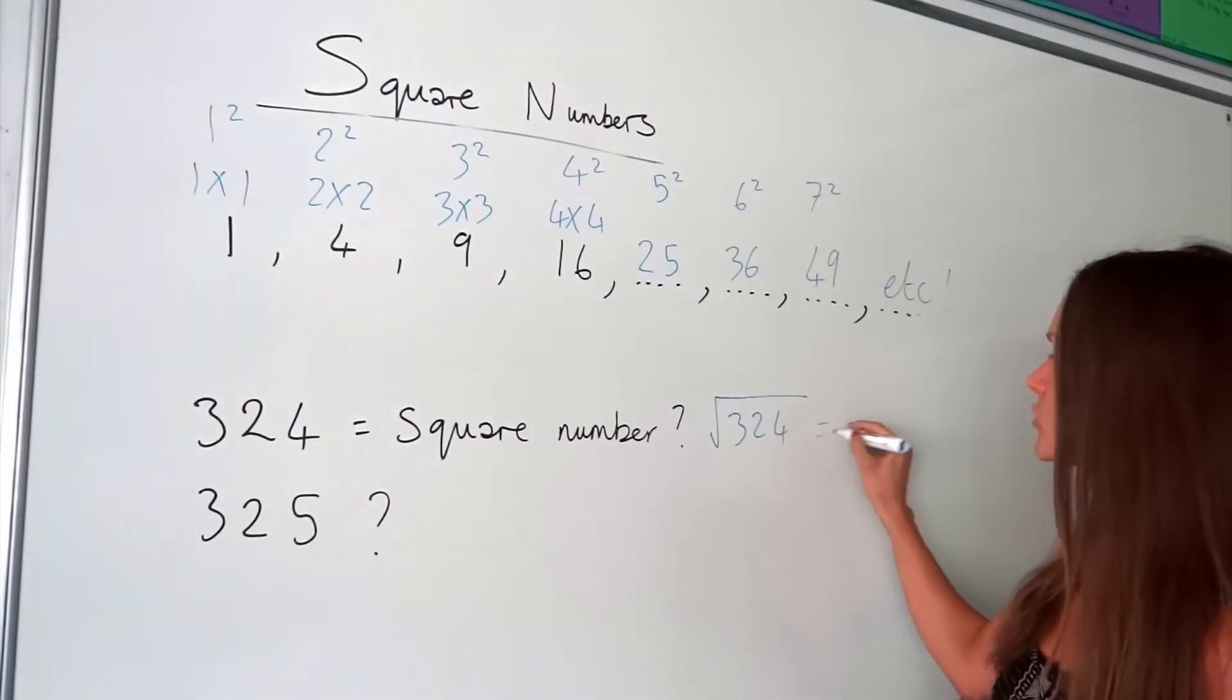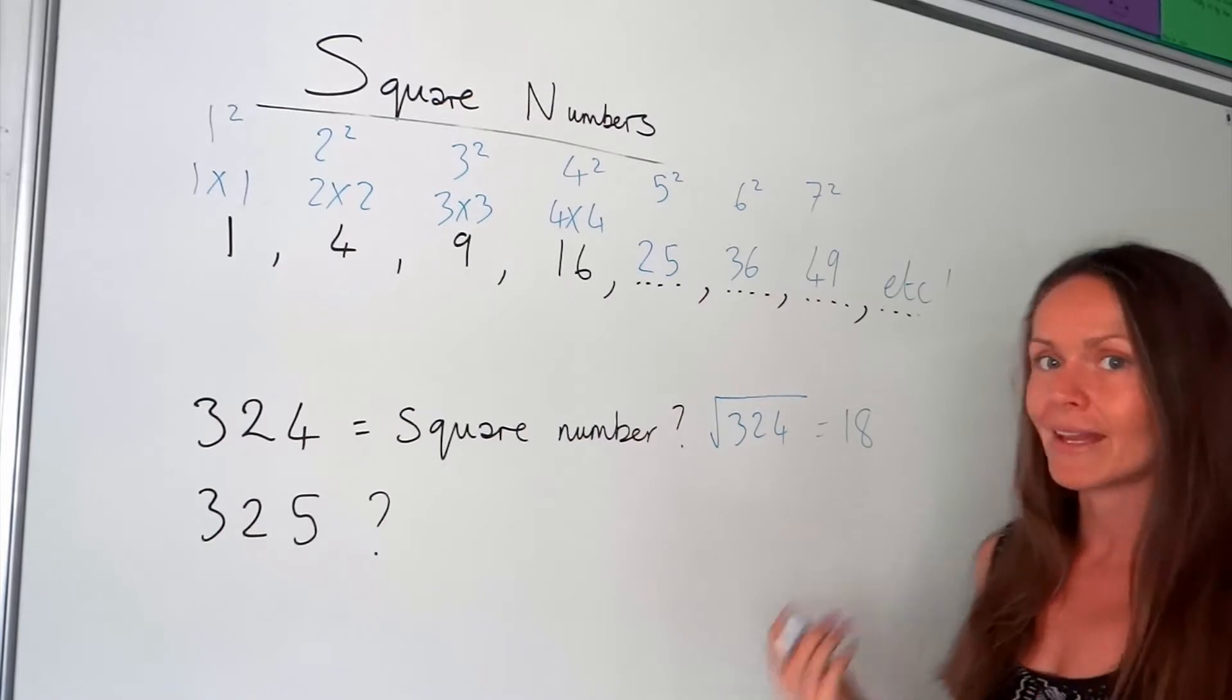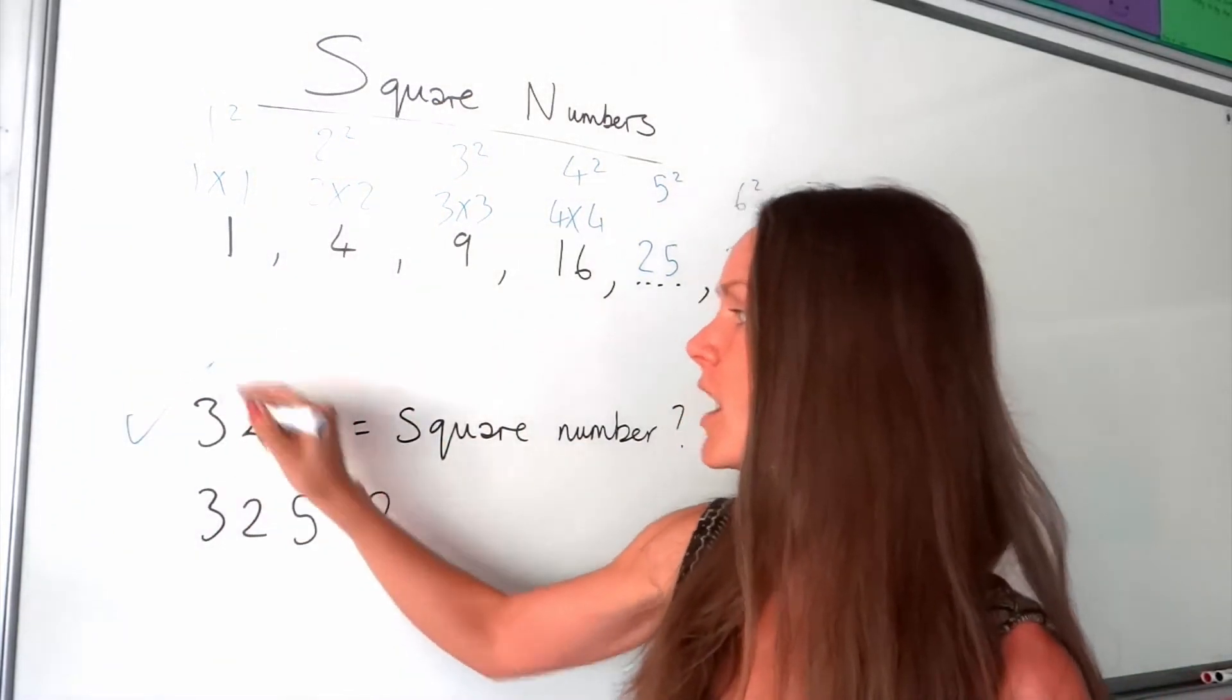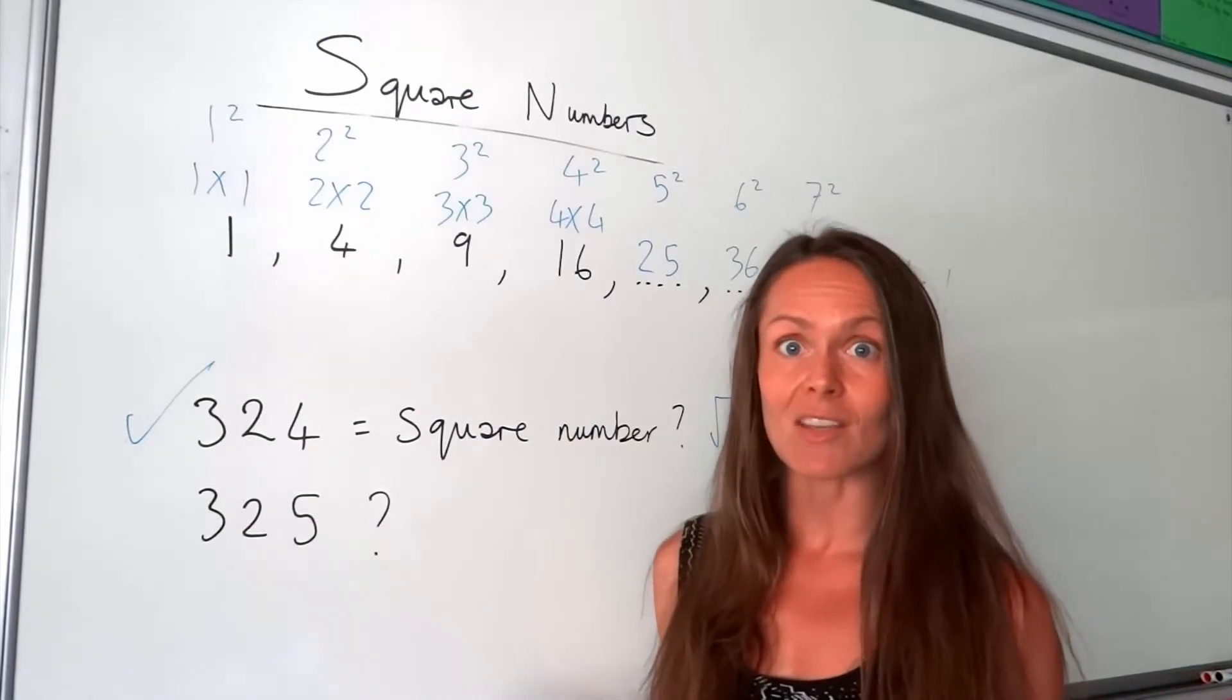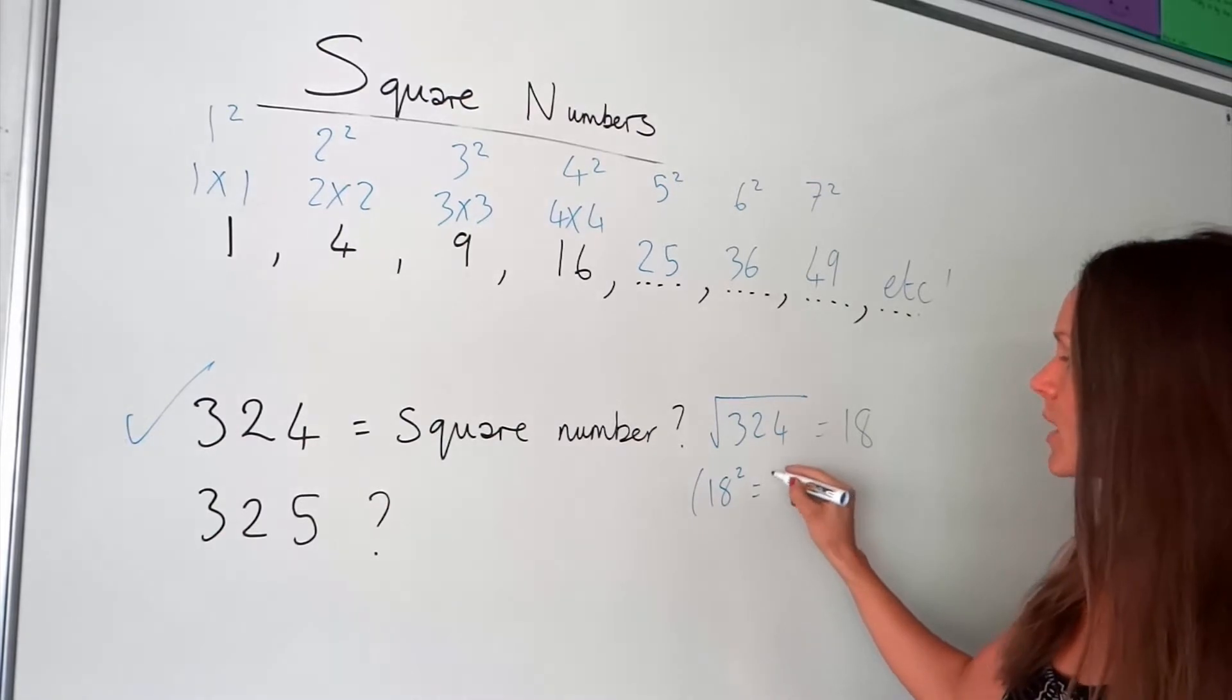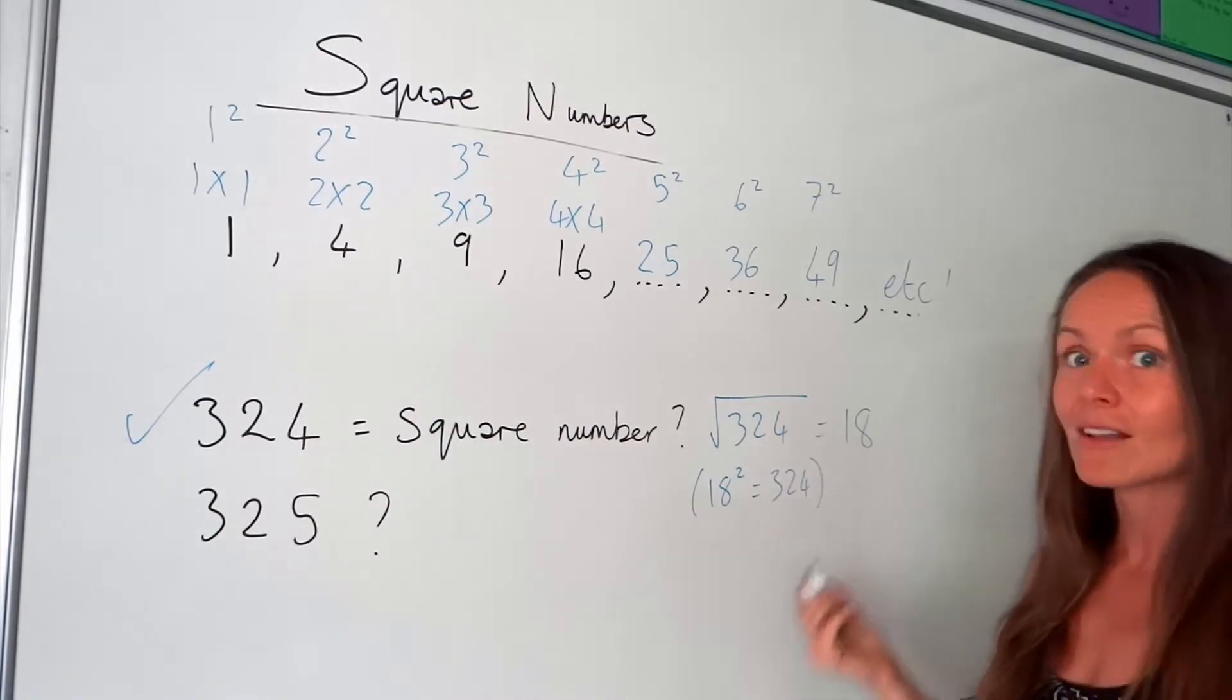So if you square root 324, you get 18. So this is an integer, it's a whole number, which means 324 is a square number. It means if we square that number 18, so times it by itself, we get 324.